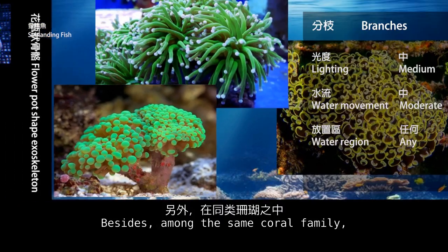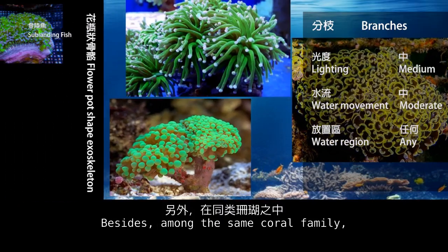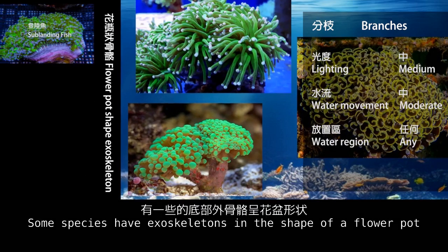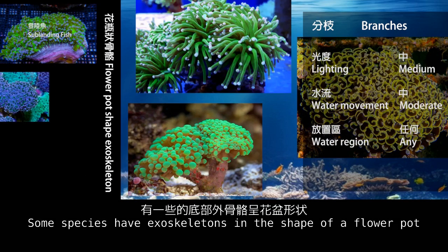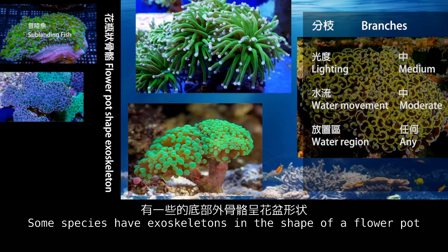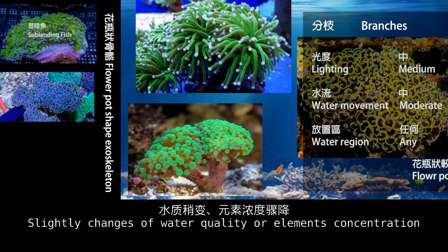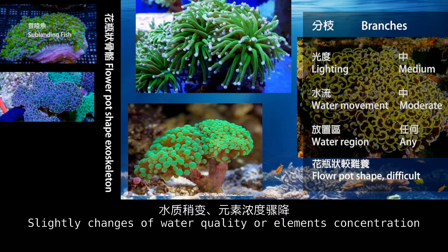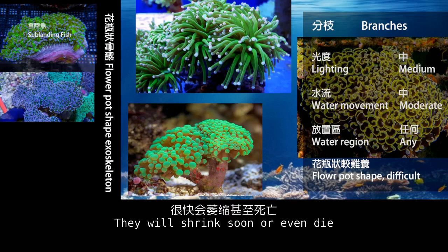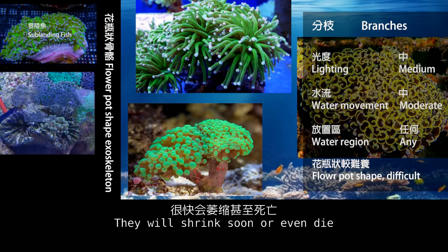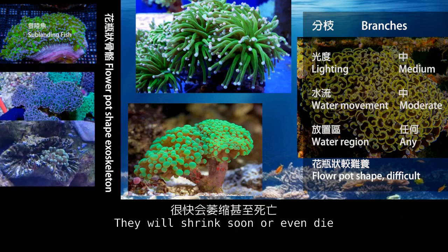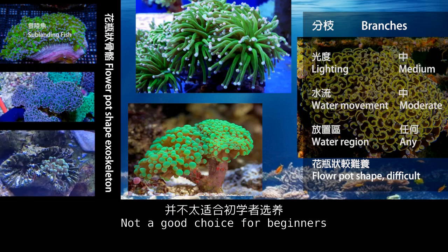Among the same coral family, some species have exoskeletons in the shape of a flat plate. Slight changes in water quality or element concentration cause them to shrink or even die — not a good choice for beginners.